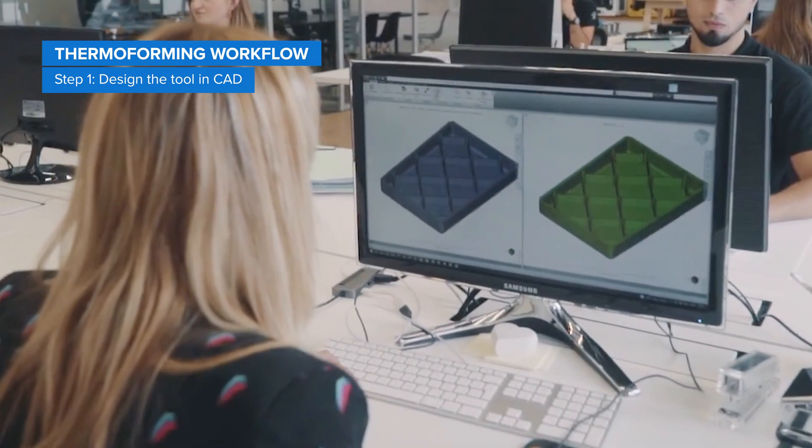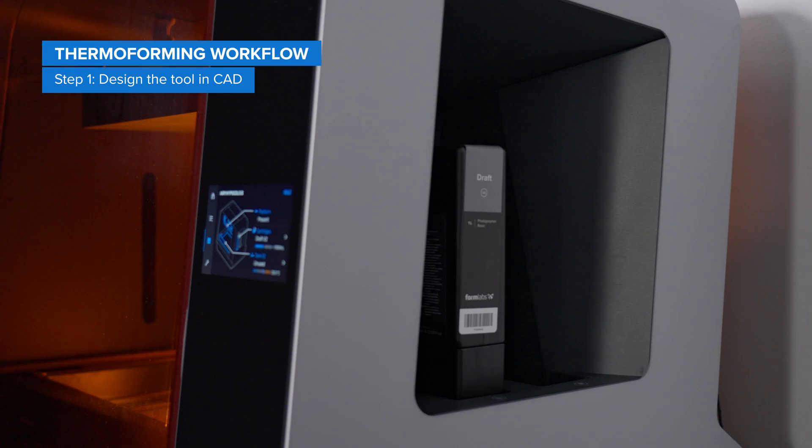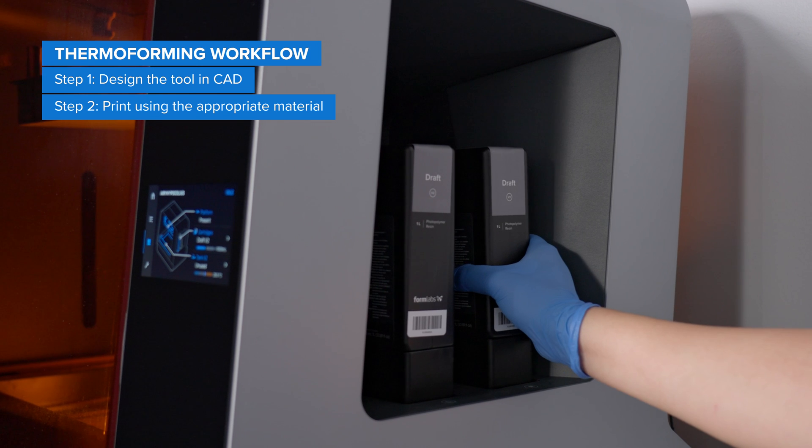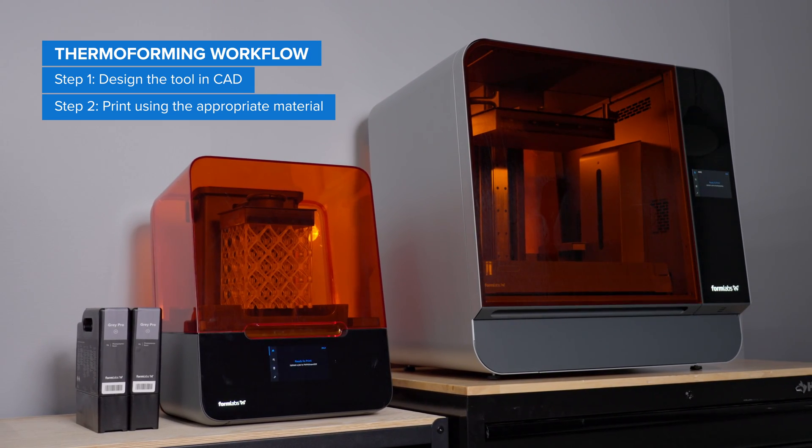First, design the tool in CAD, adhering to the general rules for thermoforming mold design. Then choose the right material from our expansive materials library and 3D print the part on a Formlabs 3D printer.